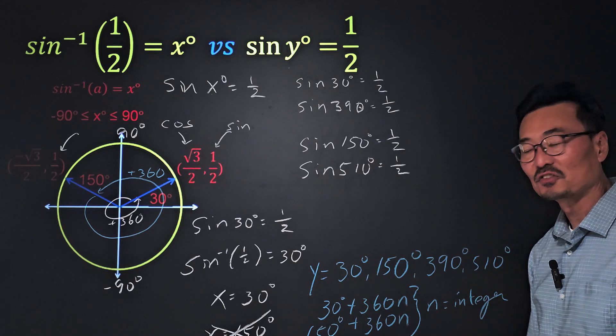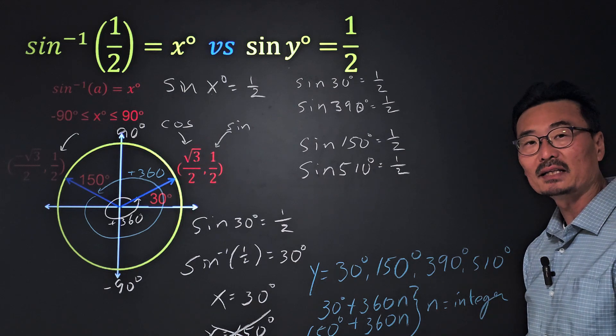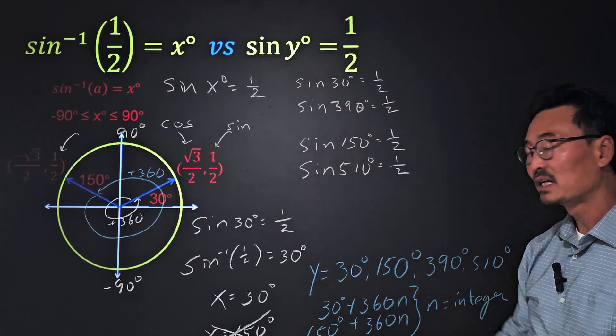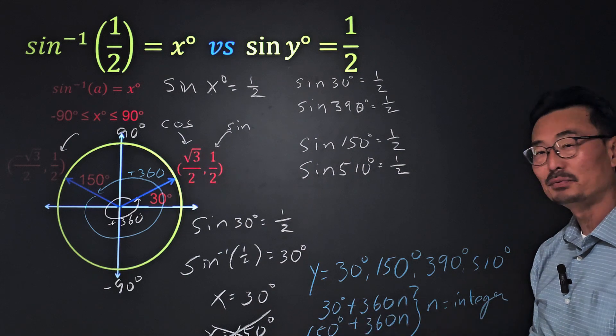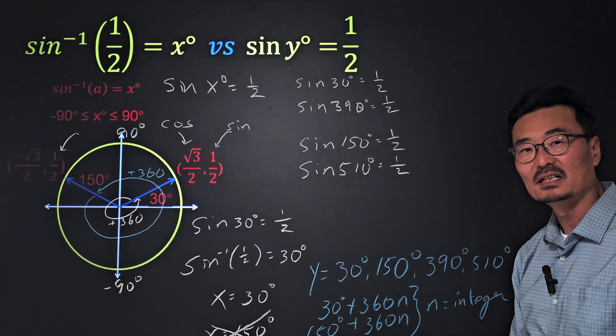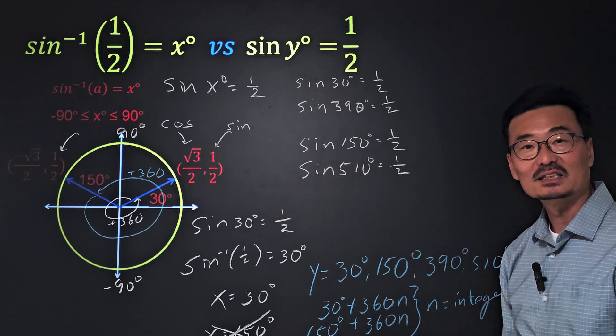So there you have it, folks. In order to completely write the solution for the y value, you have to write it as 30 plus 360n and also 150 plus 360n, where n is an integer value.